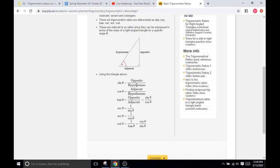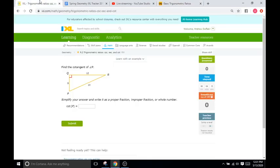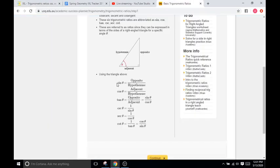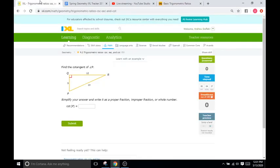Sine is opposite over hypotenuse, whereas cosecant is hypotenuse over opposite. Cosine is adjacent over hypotenuse, whereas secant is hypotenuse over adjacent. Tangent is opposite over adjacent, whereas cotangent is adjacent over opposite. The way I think about that is with the alphabet: S is related to C, C is related to S, and then of course the tangents are related.